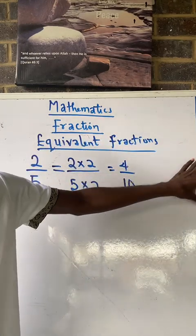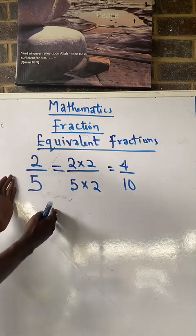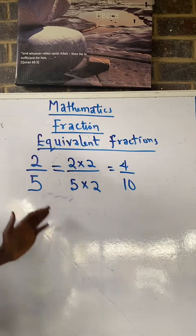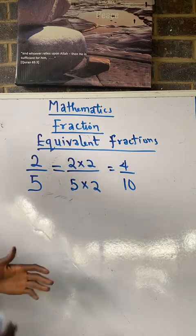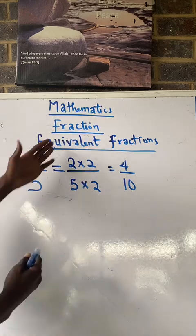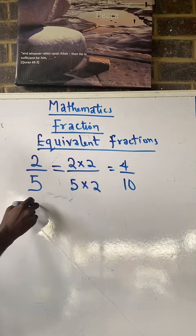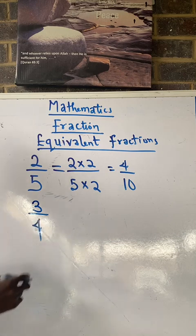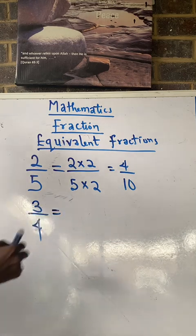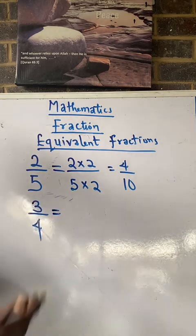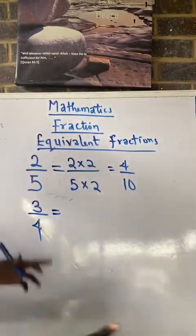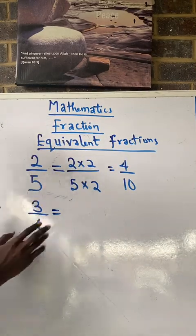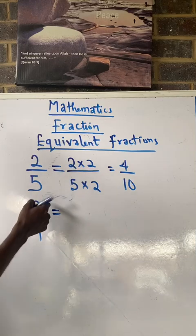That's a simple explanation. Now let's say a question asks you to write five equivalent fractions to a particular fraction. Let's take for instance three over four. I want to write five equivalent fractions to this. Just pick numbers starting from two, three, four, and so on. Start by multiplying both by two: two times three will give me six.